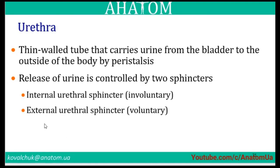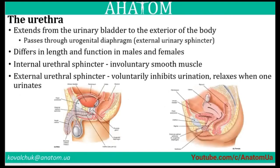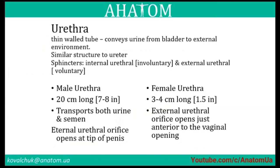The internal urethral sphincter is involuntary; the external urethral sphincter is voluntary and inhibits urination, relaxing when one urinates. The urethra is a walled tube that conveys urine from the bladder to the external environment. The male urethra is approximately 20 cm long and the female urethra is 3–4 cm long. The male urethra also transports semen.